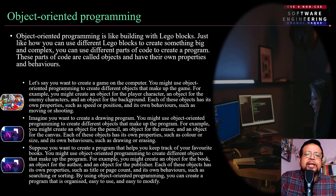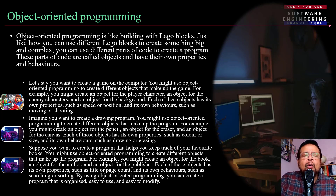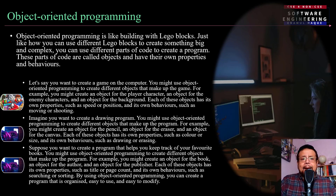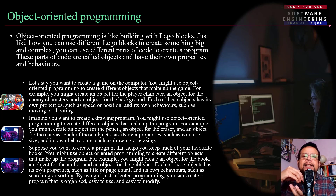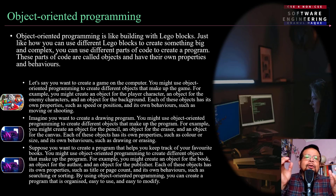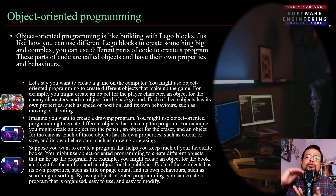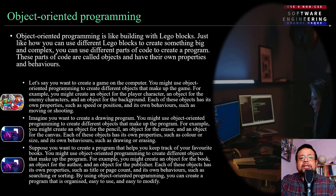Object-oriented programming is like building with Lego blocks. Just like how you can use different Lego blocks to create something big and complex, when you have a structure of bricks and blocks, you can create different blocks of code to create a program — that is object-oriented programming. These parts of code are called objects.